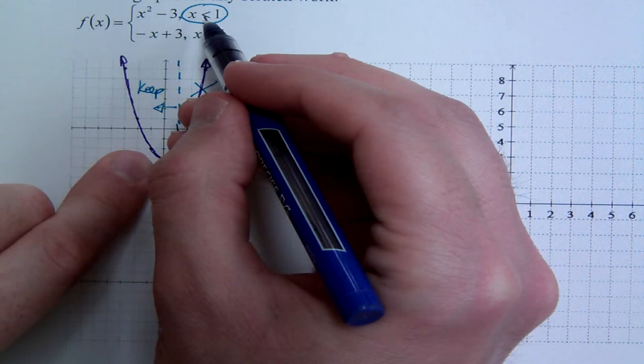Now this point right here, notice how it says x is less than 1. That means you don't actually get to include this one, so it's going to be an open circle here. So you just take this shape and you translate it over. So it's only part of the parabola.